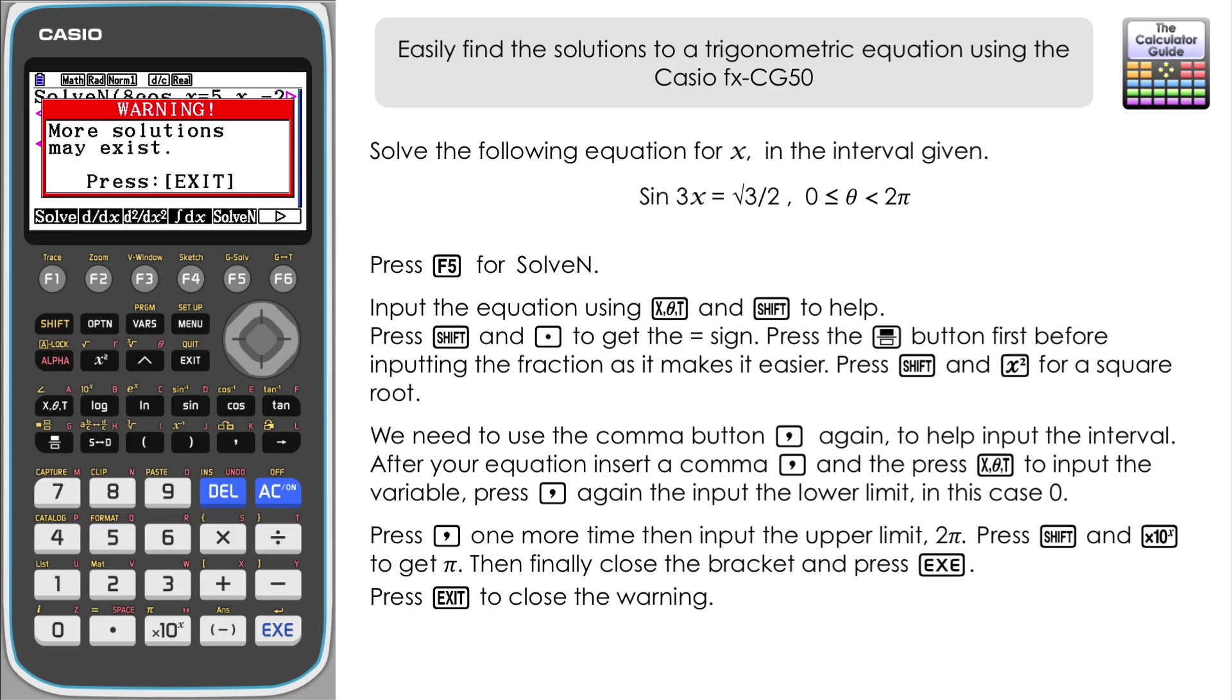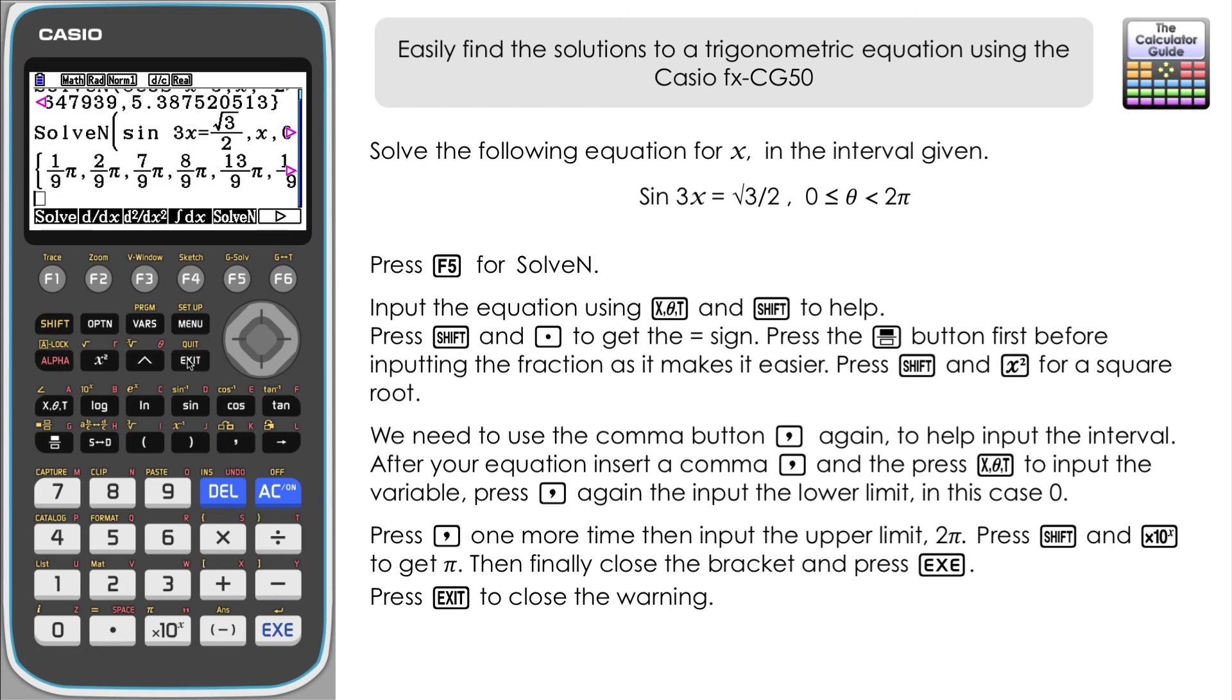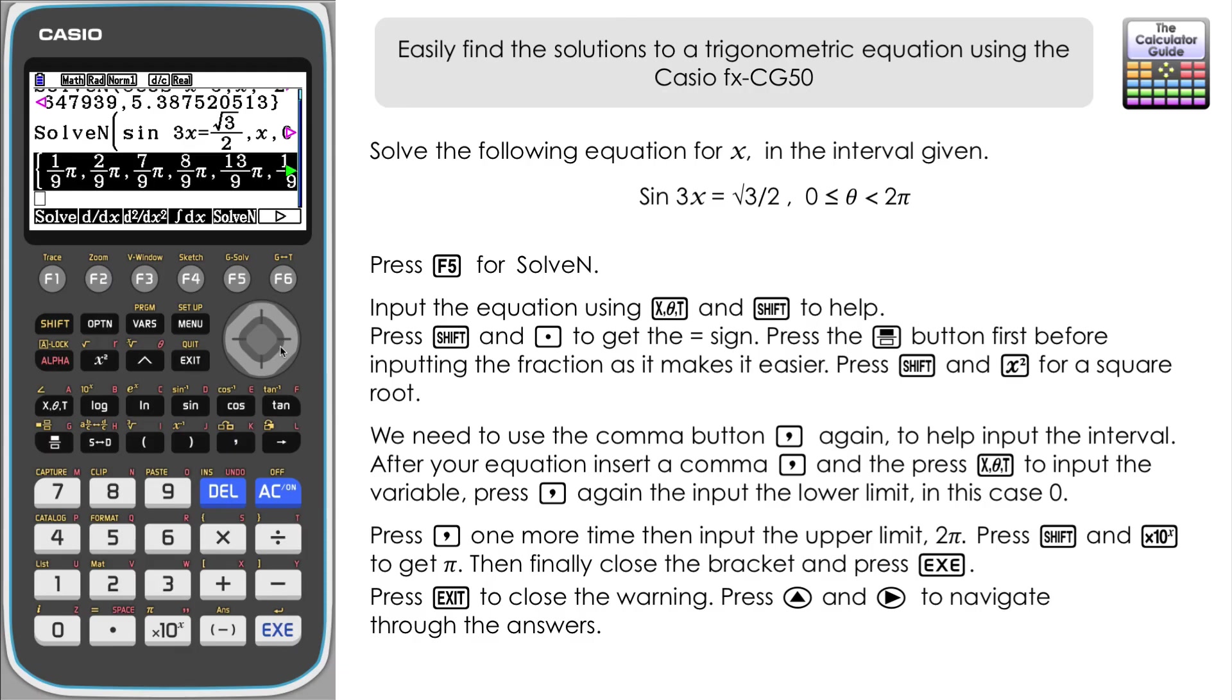And once again we've got the warning there that more solutions may exist, but I think in this case we're going to get all the solutions that we need. Press Exit and here we can see on the row above there, just navigate up, we've got all the solutions. So π/9, 2π/9, 7π/9, and so on. We've got all six solutions in that given interval for the equation that we have.